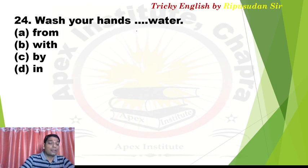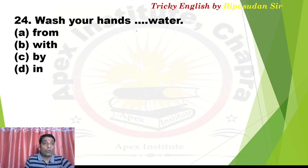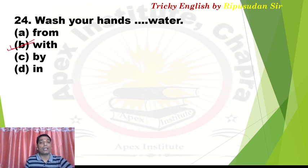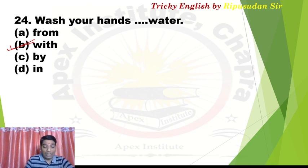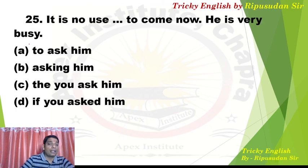Question 24: 'Wash your hands dash water.' Wash your hands with water. Very simple — 'with water'. 'With' indicates the means or instrument. It denotes the source or medium.